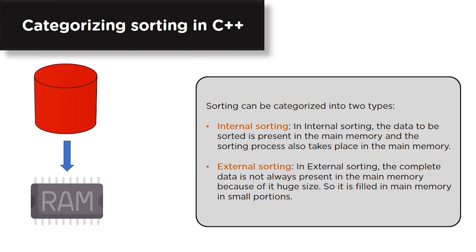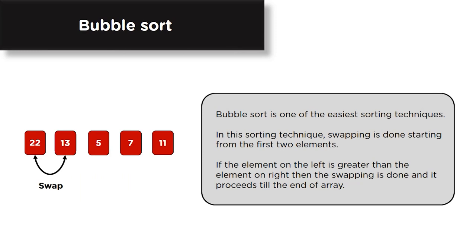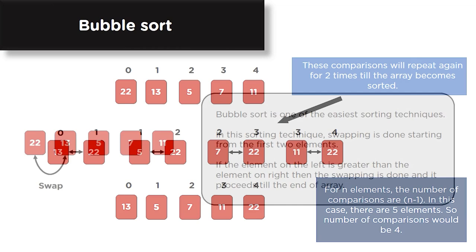Now coming to types of sorting in C++, there are various types: bubble sort, selection sort, insertion sort, and quick sort. Bubble sort is one of the easiest sorting techniques in C++. In this technique, comparisons start from the first two elements. Adjacent elements are compared, and if the element on the left is greater than the element on the right, swapping is done, proceeding till the end of the array.